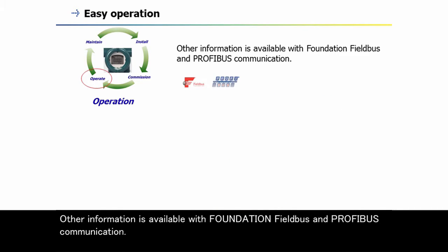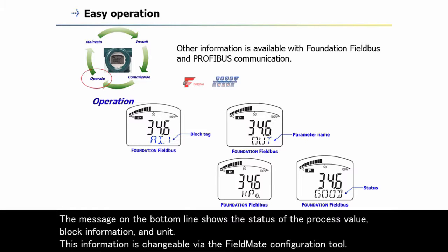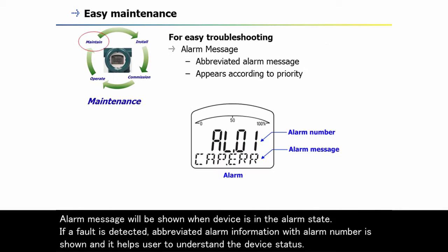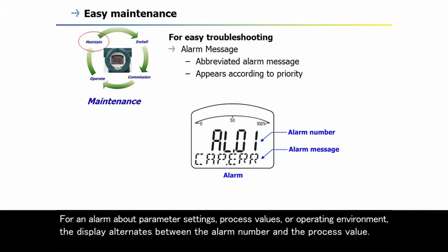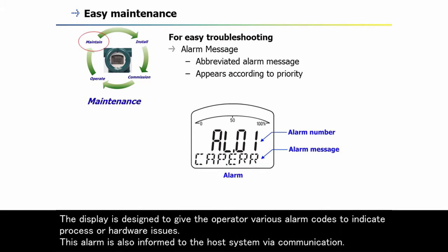Other information is available with Foundation Fieldbus and PROFIBUS communication. The message on the bottom line shows the status of the process value, block information, and unit, and is changeable via the FieldMate configuration tool. Alarm messages are shown when the device is in an alarm state. If a fault is detected, abbreviated alarm information with alarm number is shown to help the user understand device status. For alarms about parameter settings, process values, or operating environment, the display alternates between the alarm number and the process value. For alarms about transmitter hardware issues, the display only shows alarm information. The alarm is also communicated to the host system via communication.